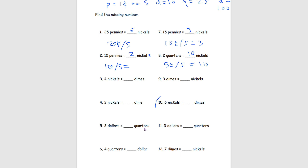For number 11, we have $3. We know $1 equals 100 cents, so $3 equals 300 cents. Over here we have blank quarters, and we know a quarter is 25 cents, so we divide by 25. The easy way to think about this: 100 divided by 25 is 4, and 3 times 100 equals 300, so we do 4 times 3 which gets us 12. So $3 is equal to 12 quarters.